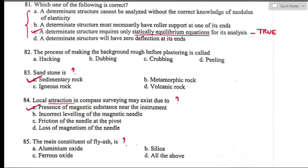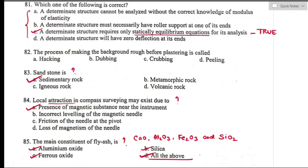Question number eighty-five: the main constituents of fly ash — fly ash is the byproduct from burning pulverized coal in electric power generating plants. Its main constituents are aluminum oxide, ferrous oxide, and silica. All options are correct. Option D is the right answer — all of the above.